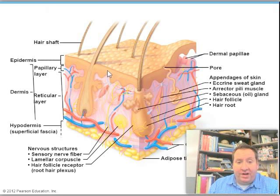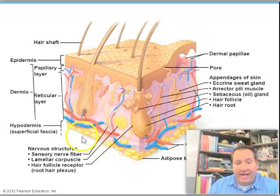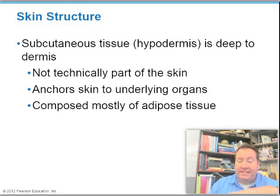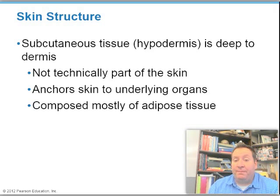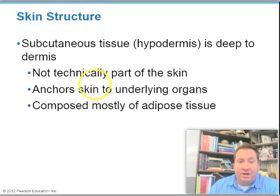Beneath the dermis is a subcutaneous layer called the hypodermis. This is mostly adipose tissue — it's not technically part of the skin, but it anchors the skin to the underlying organs. It's mostly composed of adipose tissue with some areolar tissue to help join the skin to muscle or whatever is beneath it.